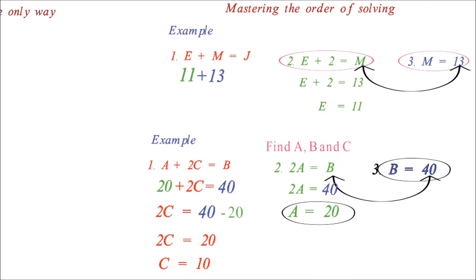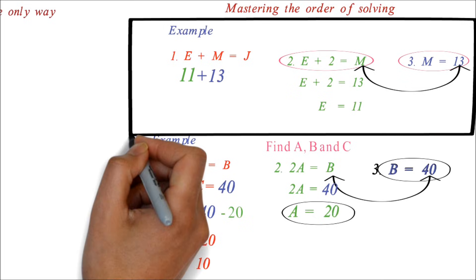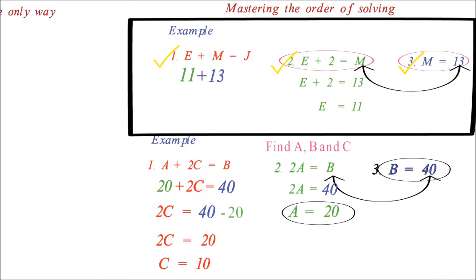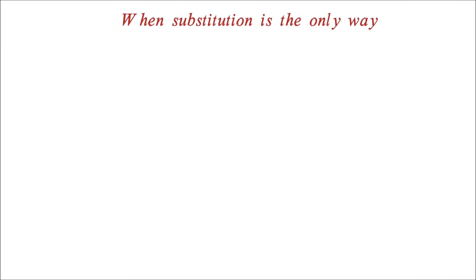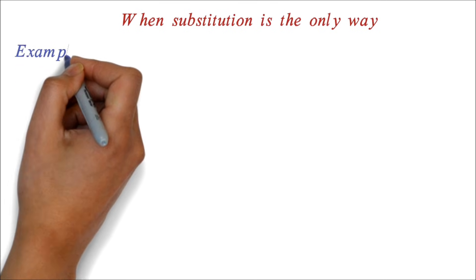When substitution is the only way. In the examples we looked at, one of our equations gave us a value which helped us to easily solve. In the first example we had M equals 13. The third equation, M equals 13, made it very easy to solve because we have a value. There are many instances where the only solution is to use the substitution of other variables.